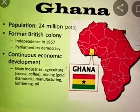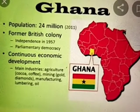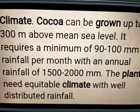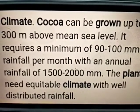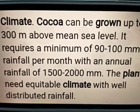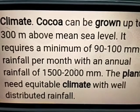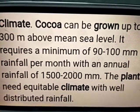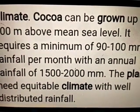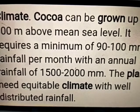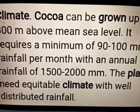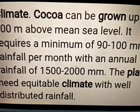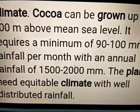Ghana is located in Western Africa along the Gulf of Guinea. Regarding climate conditions and soil: cocoa can be grown up to 300 meters above mean sea level. It requires a minimum of 90 to 100 millimeters of rainfall per month, with an annual rainfall of 1500 to 2000 millimeters. The plant needs an equable climate with well-distributed rainfall. Hot and wet climate is suitable for cocoa production. Cocoa needs a temperature of 27 degrees centigrade. The cocoa plant also needs well-drained, porous soil and shelter from strong winds and direct light.